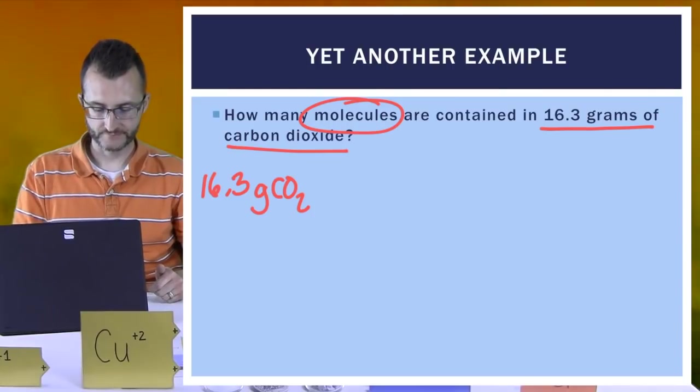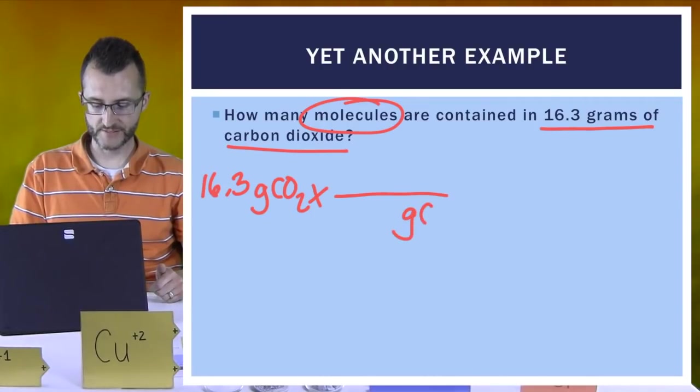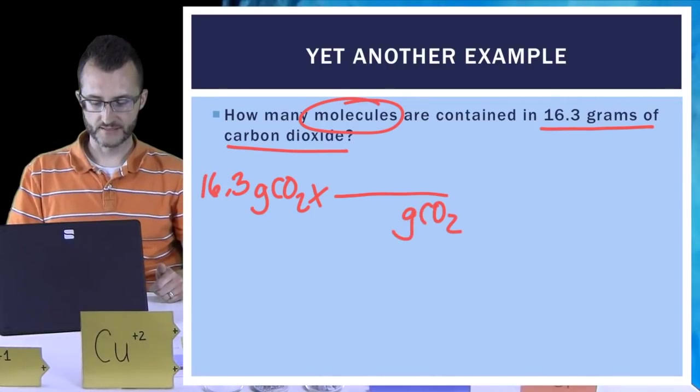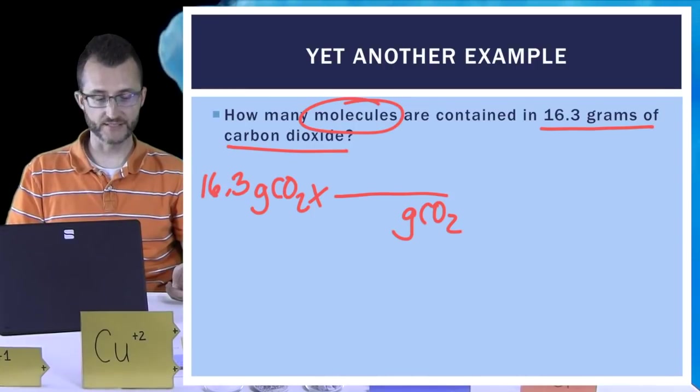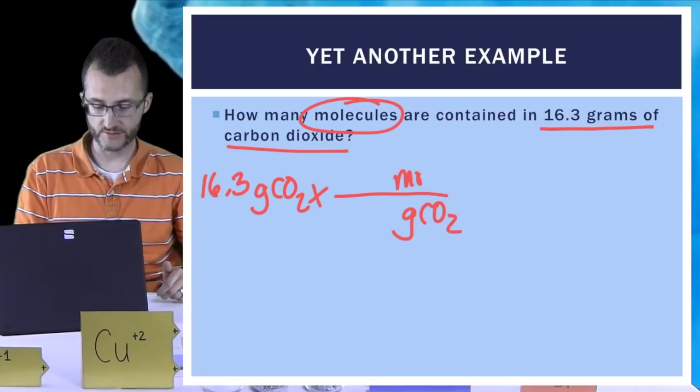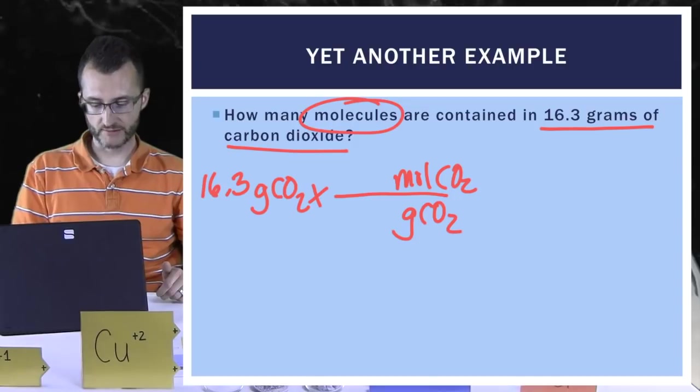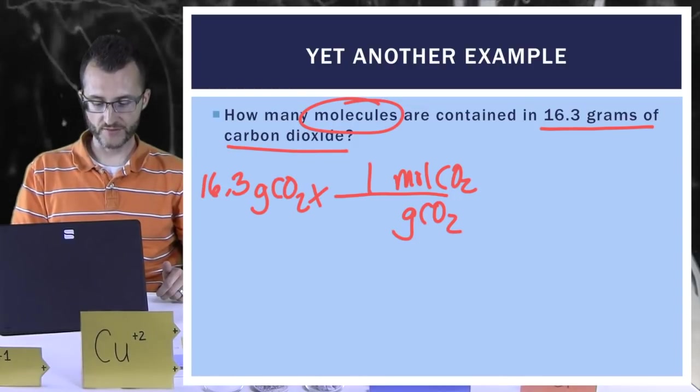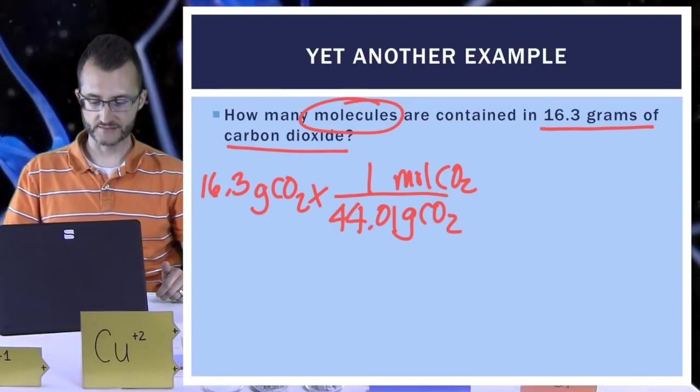Alright. So let's set up our first conversion factor here. We want grams to cancel out. So what are we going to put in the denominator? So grams of CO2 in the bottom. Good. Now we want to get to molecules, but remember in that diagram, there was no direct arrow from grams to molecules. So I really only know how to convert grams to moles, so I'd have to do that first. So moles of CO2 on top. Good. So let's get the numbers in there for CO2. Well, it should just be one mole. And I know from before the molar mass of CO2 is 44.01, so that goes in the denominator.